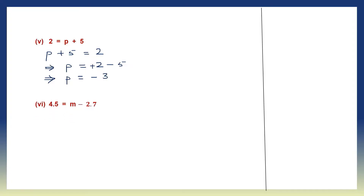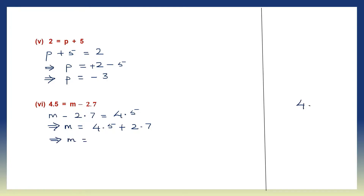Question 6: 4.5 is equal to m minus 2.7. Rewriting: m minus 2.7 equals 4.5. To find the value of m, we leave 4.5 on the right hand side and transpose minus 2.7 — that becomes plus 2.7. So m equals 4.5 plus 2.7. 5 plus 7 is 12, carry 1, put the point, 4 plus 1 is 5, then 6, then 7. So the value of m is 7.2.